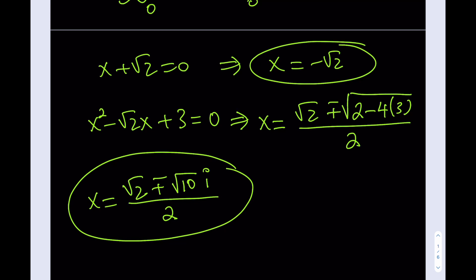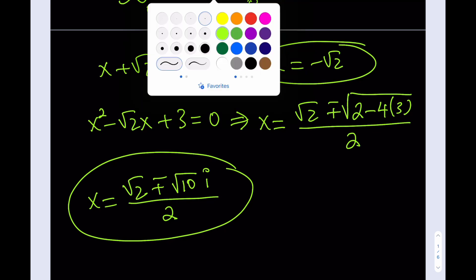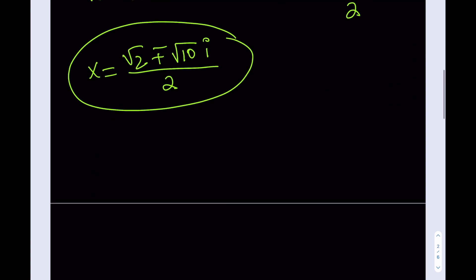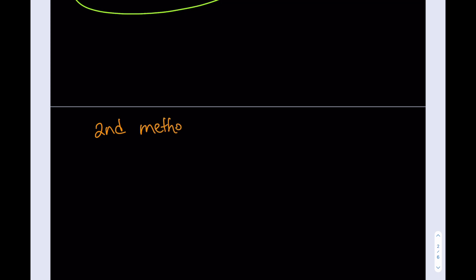Since this is a cubic equation, you expect to get three solutions, whether they're all real or not. In this case, we have two complex solutions that are conjugates. That's the first method. Let's look at this equation from another perspective. The second method involves the knowledge that our equation will probably contain some factor of square root of 2, because the constant term is 3 root 2.